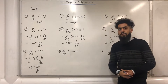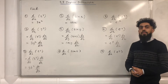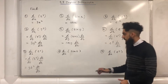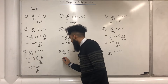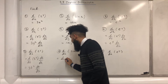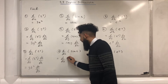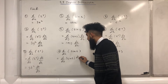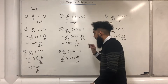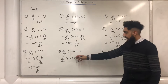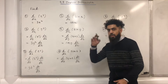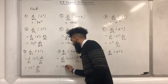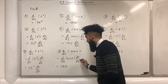Question number eight: differentiate sine t with respect to x. Again, I can use the chain rule and write d over dt of sine t, multiplied by dt over dx. Differentiating sine t with respect to t gives cos t, and then dt over dx.